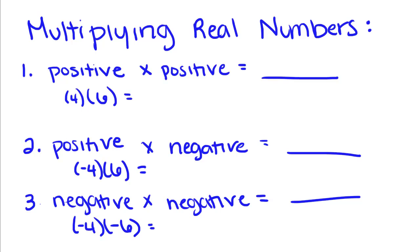Today for our first lesson in our new algebra series, we're going to talk about multiplying and dividing real numbers. The first thing you need to know is that multiplication and division are what's called inverse functions. That means to undo multiplication, you divide, and to undo division, you multiply.